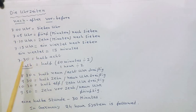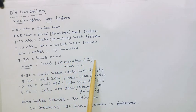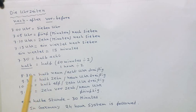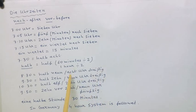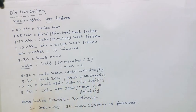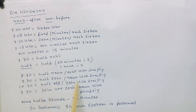Seven thirty means halb acht. Now, what is meant by halb? In Germany, sixty minutes divided by two — that is called half. Halb acht means seven thirty. Same as: acht Uhr dreißig — eight thirty — is halb neun, that is thirty minutes before nine. Halb zehn — nine thirty, that is thirty minutes before ten. Neun Uhr dreißig. Halb elf — ten thirty. Eine halbe Stunde — thirty minutes.